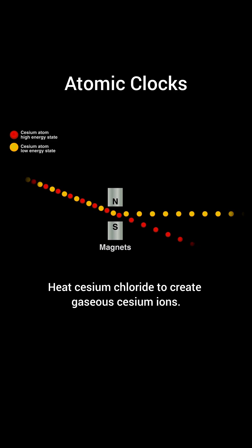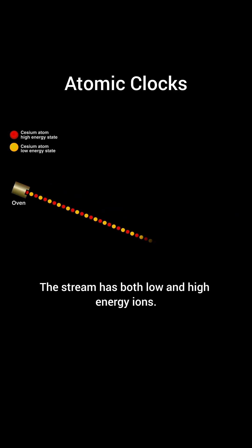Here's how it happens. Heat cesium chloride to create gaseous cesium ions. The stream has both low and high energy ions.